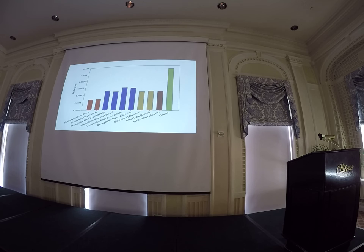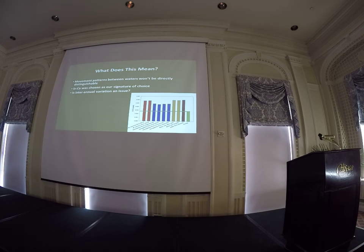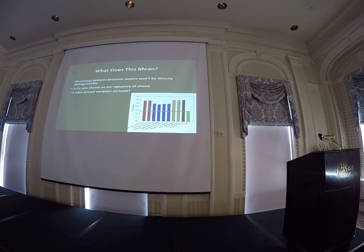Barium to calcium looks a little bit better; however, the problem is it's quite variable, so we really didn't want to use that. Lastly, we have strontium to calcium, which is really nice because the hatchery value is about half of all the other systems. So it looks quite promising, and it could potentially be used to discriminate between stocked and wild fish.